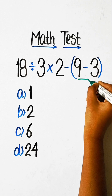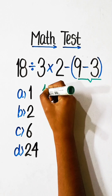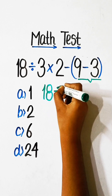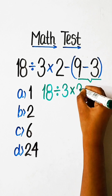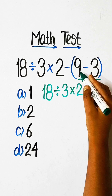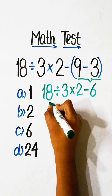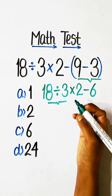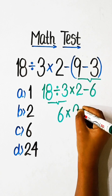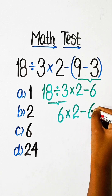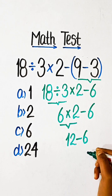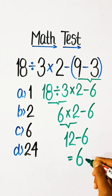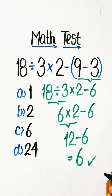First of all we have to solve the bracket part, so we can write: 18 divided by 3 multiply by 2, minus 9 minus 3 which is 6. Then 18 divided by 3 is 6, multiply by 2 minus 6. 6 multiply by 2 is 12, minus 6. 12 minus 6 equals 6. So 6 will be our correct answer — Option C.